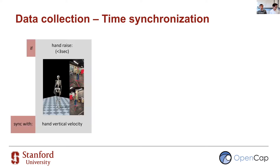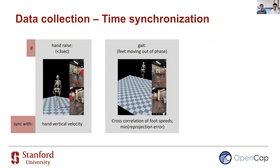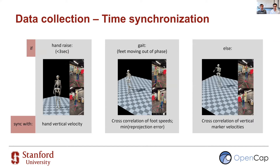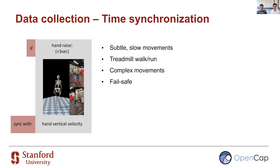We have developed three algorithms for synchronizing the videos. If a hand raise is detected, we use the vertical velocity of the hand key point. If no hand raise is detected, we identify whether the activity is a gait trial by looking at whether the feet are moving in alternating beats. If gait is detected, we use cross-correlation of foot key point speeds. If not, we use cross-correlation of all marker vertical speeds. We recommend the hand raise approach for subtle or slow movements, treadmill activities, and complex tasks — it is the fail-safe approach.